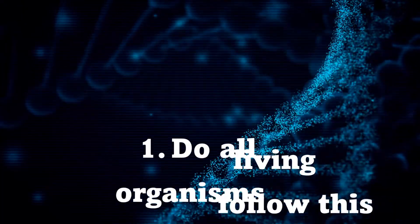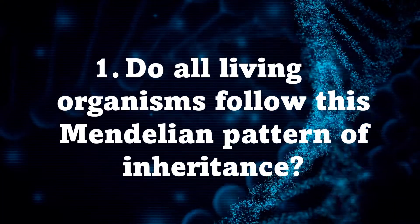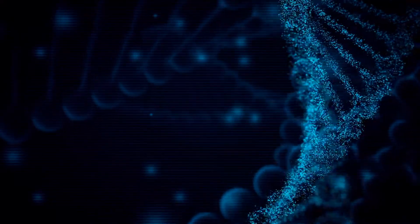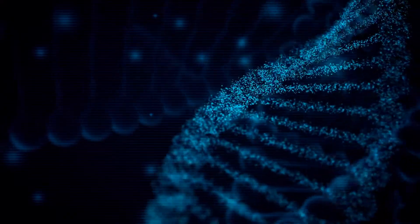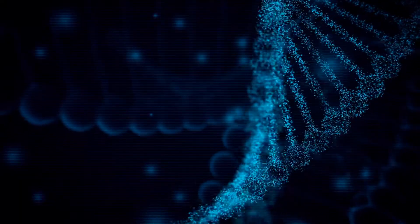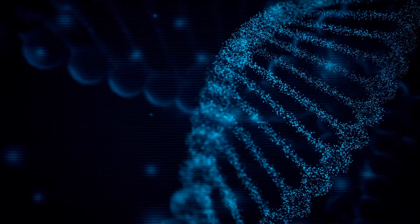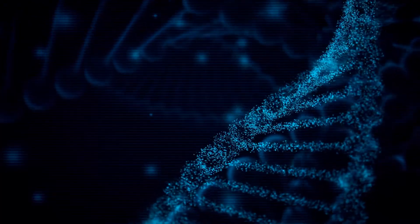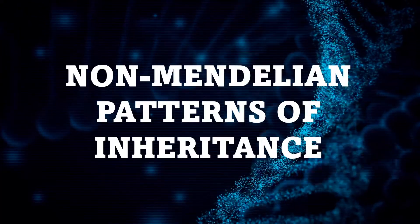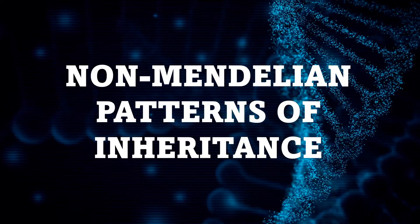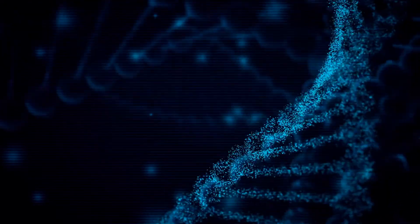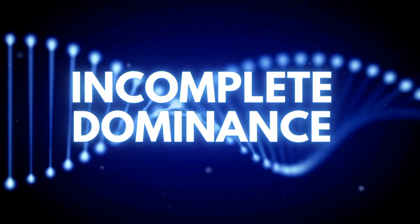The question is: do all organisms follow this Mendelian pattern of inheritance? For today, we will be studying another type of biological inheritance wherein the patterns of phenotypes do not occur as expected in Mendelian laws of inheritance. This is called the non-Mendelian patterns of inheritance, and we will focus on one of these — which is incomplete dominance.